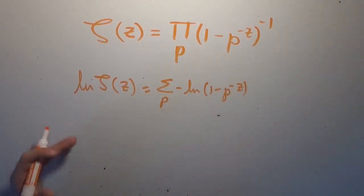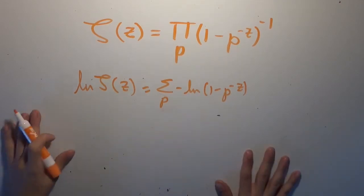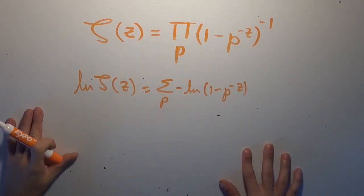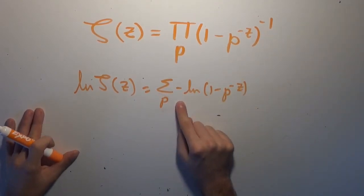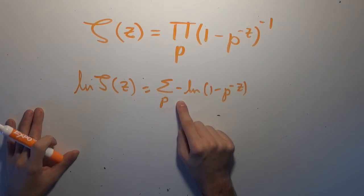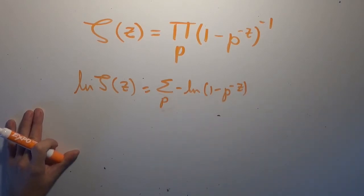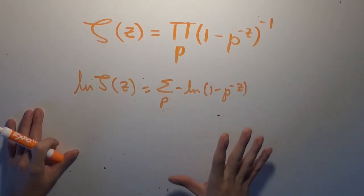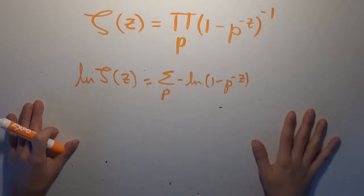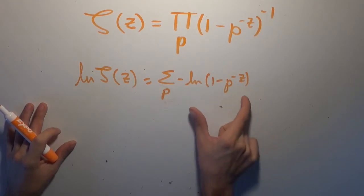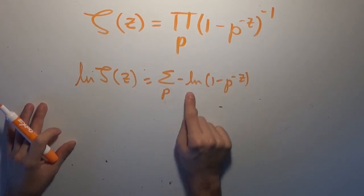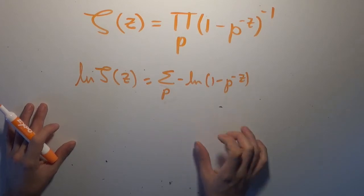You can think of the logarithm as bringing everything down one level: it takes a product and turns it into a sum, and it takes an exponent and turns it into a product. I bet if you applied it to tetration it would turn it into an exponent — that's a great way to generalize the rule. In any case, we can now substitute the Taylor series expansion for −ln(1 − x) to get the infinite sum representation.